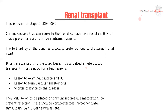The iliac fossa location is beneficial for several reasons: the kidney is more superficial, making it easier to examine, palpate, ultrasound, and biopsy if needed. It is also close to the common and external iliac arteries, making vascular anastomosis relatively easier, and the distance to the bladder is shorter. After surgery, patients are placed on immunosuppressive therapy to prevent rejection — corticosteroids in the short term, and longer term medications such as azathioprine and mycophenolate.